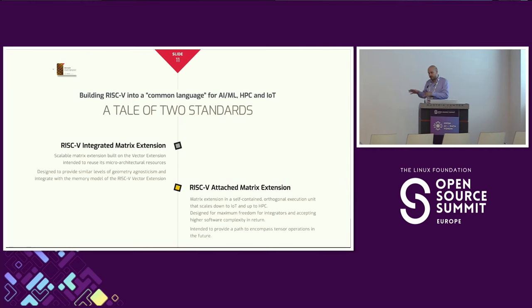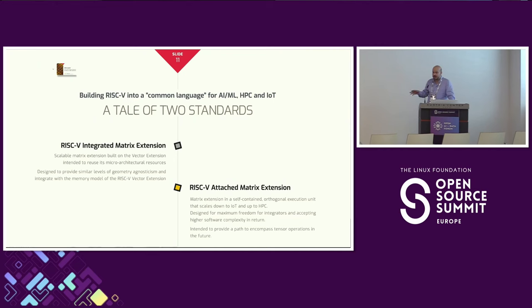The more interesting one is the Attached Matrix Extension — consider this an accelerator core on the chip. It isn't even tied to one core; one AME unit could be shared by multiple cores. It will have very large tile registers, matrix registers, and their own memory ports. This targets AI-ML on the data center, high-performance inference on the network edge, and HPC. It's for people doing something new around AI-ML acceleration built on RISC-V, not those just wanting to augment their core with a little matrix capability as with IME.